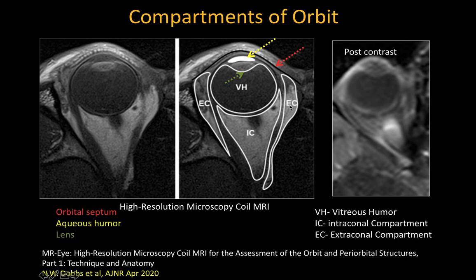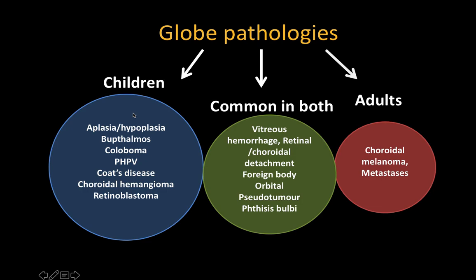The extraconal compartment is located between the muscle cone and the bony orbital wall. On post-contrast imaging, only the choroid of the globe will enhance, as it is the vascular part, while the sclera — seen as a black line — never enhances. Globe pathologies are divided into children, adults, and common to both. In children: congenital anomalies like aplasia, hypoplasia, buphthalmos, colobomas, persistent hyperplastic primary vitreous, Coats disease, choroidal hemangioma, and retinoblastoma.